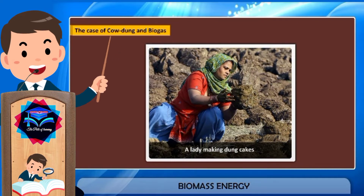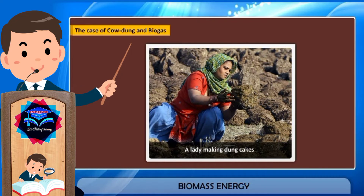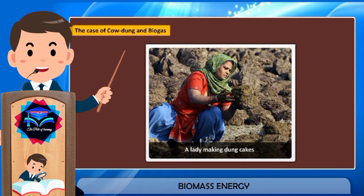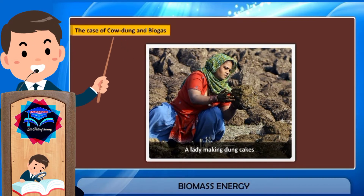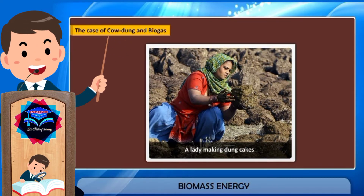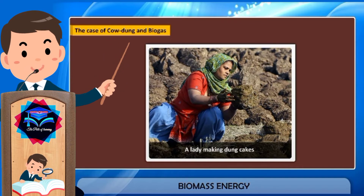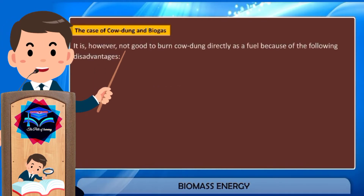Cow dung, also known as cattle dung or animal dung, is the excreta of cattle such as cows and buffaloes. Traditionally, cow dung is used in villages as a fuel to cook food. This direct use of cow dung has many disadvantages such as more smoke and large amounts of ash residue. To overcome these disadvantages, it is advisable to prepare biogas or gobar gas from cow dung. The biogas thus formed is a clean, smokeless fuel, and after extracting the biogas, the spent cow dung can be used as manure in agricultural fields.